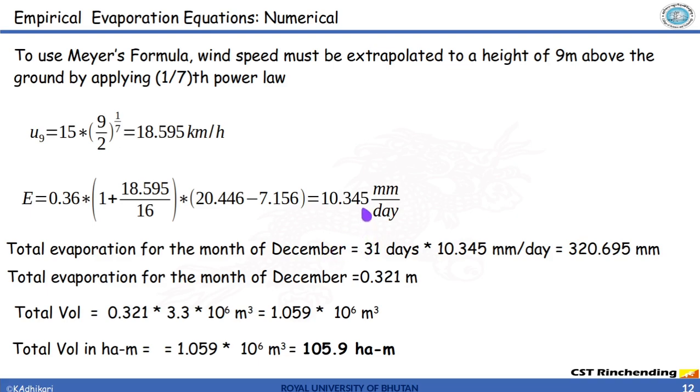This is per day. December has 31 days. So when you multiply 31 with this parameter we get total evaporation, 320.695 mm in whole month. That is in terms of depth.